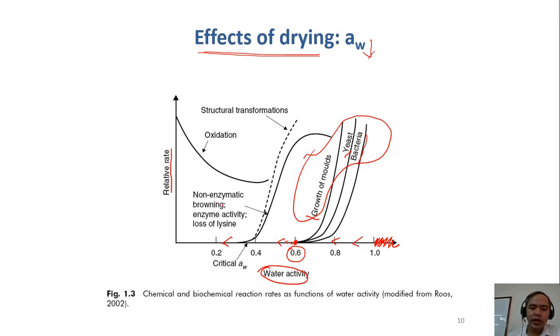So in terms of other reactions, like chemical reaction, non-enzymatic browning, including Maillard reaction, caramelization, and then this curve also illustrates for enzyme activity, enzymatical reaction. The loss of lysine, lysine and essential amino acids, can be lost by heating, for example.